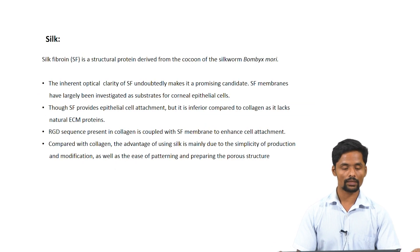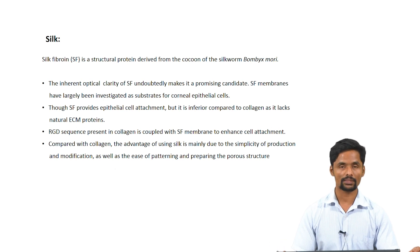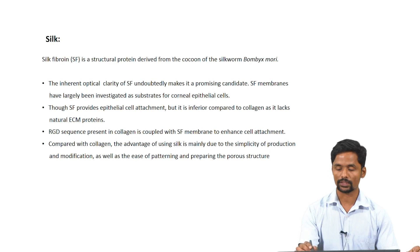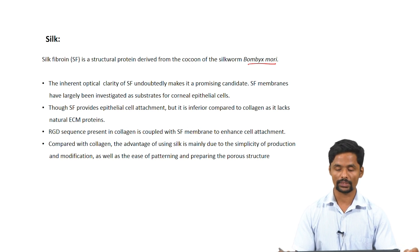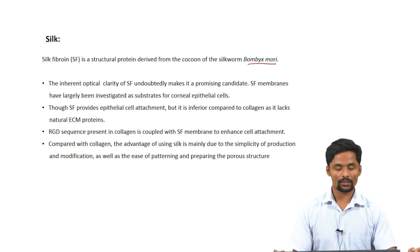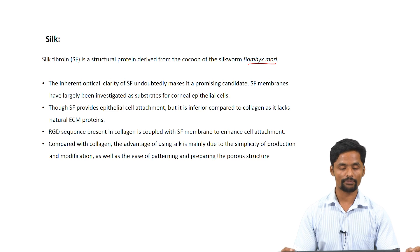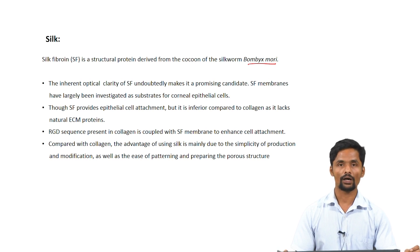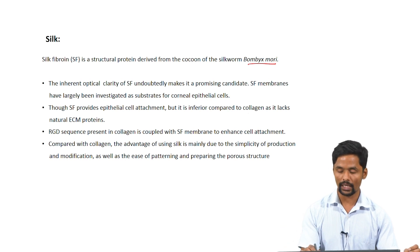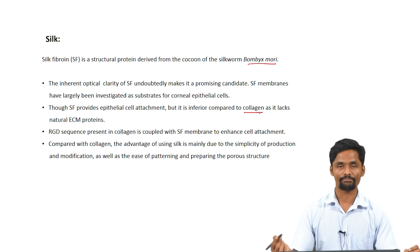Next is silk fibroin. Silk fibroin is a structural protein derived from the silkworm Bombyx mori. The inherent optical properties of silk fibroin make it most suitable for corneal tissue engineering. Silk fibroin is used as a substrate for corneal epithelial cells. However, its cell attachment properties are not as superior as collagen, as it lacks natural ECM proteins.